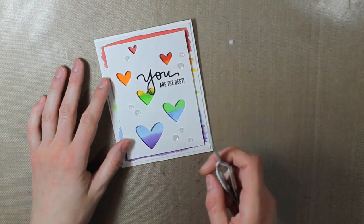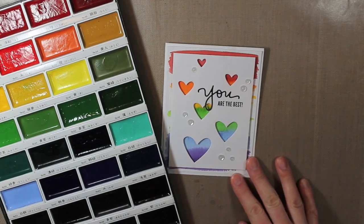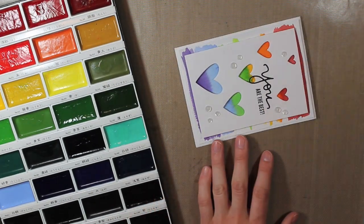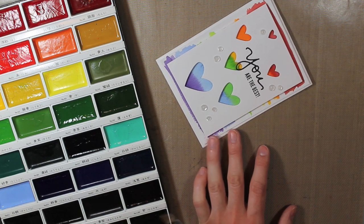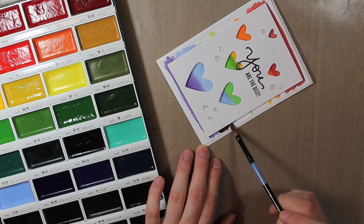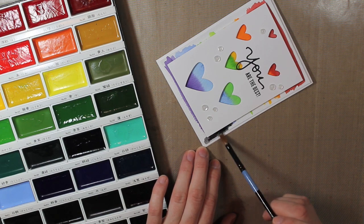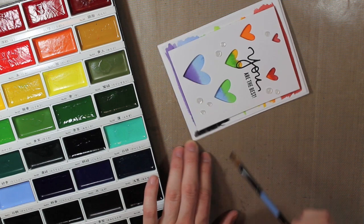Alright so to change that border, I thought I would go with some black to match my U die cut. So I'm taking the Gansai Tambi watercolors in the black color and I'm just coloring in the edge completely black. It took a few coats just to cover it.